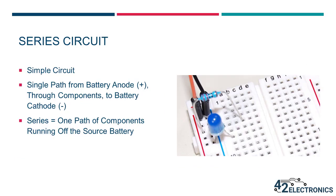This circuit probably looks familiar. In the last lesson, you built a similar circuit. That circuit had a single path that ran from the anode of the battery, through a resistor, through an LED, and then back to the cathode, or the negative, of the battery. This is known as a series circuit, one path of components running off the source battery.